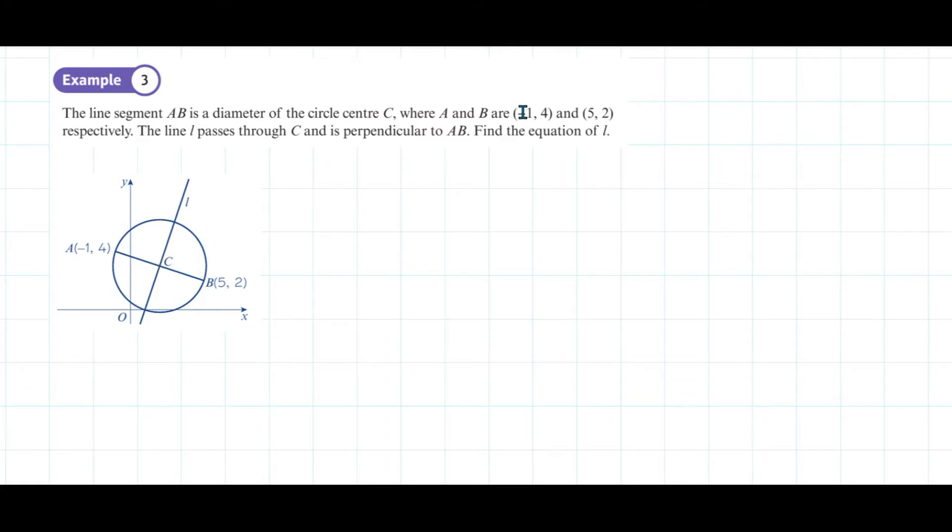Where A and B are (-1, 4) and (5, 2) respectively. The line L, here's our line L, passes through C, the center, and is perpendicular to AB. Find the equation of L.